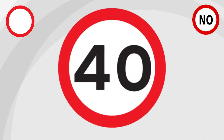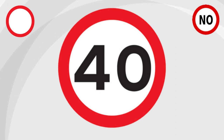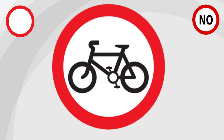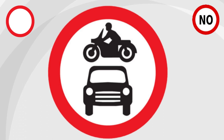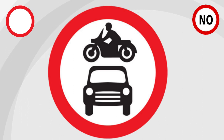Let us start the test and see how many of these signs you know. The sign is in a red circle so it indicates no. It's got the number 40 in it, so it's a speed limit — no more than 40. Red circle, no — no cyclists. As this sign has a picture of a car and a motorcycle, it means no motor vehicles. However, buses and cyclists are allowed through this sign.